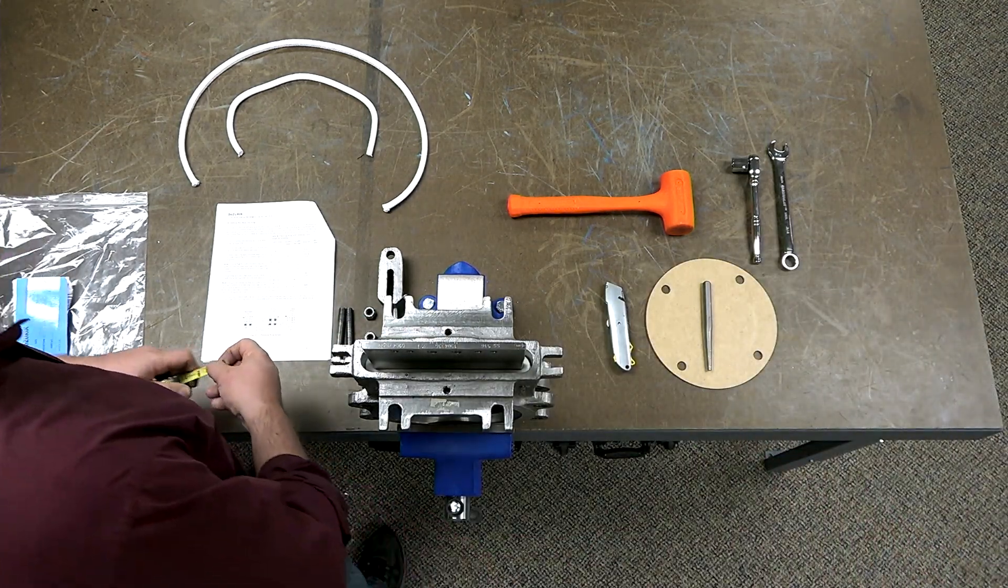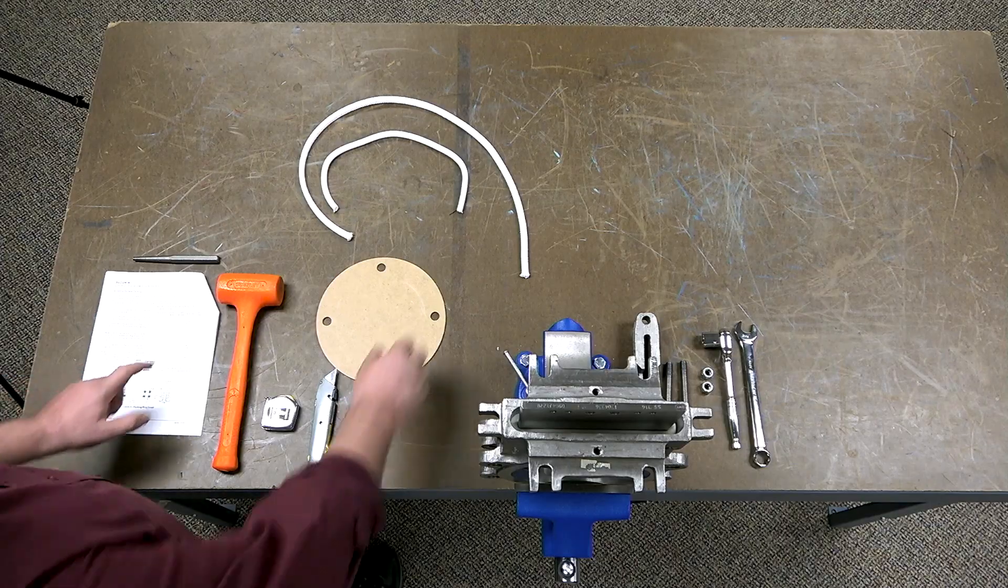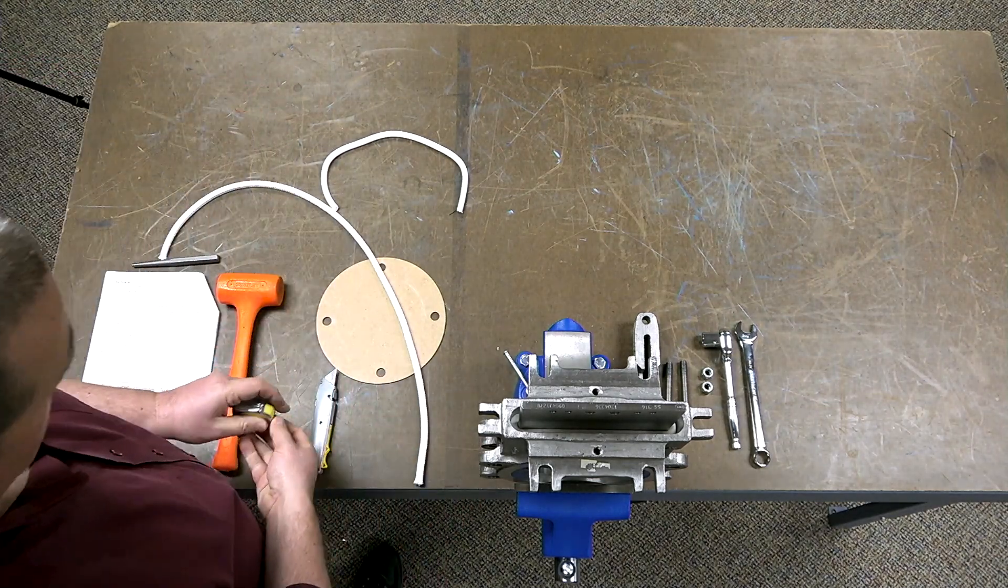Next, cut the packing to the correct length for the valve size, per the table in the IOM. Measure the proper length of the packing and cut the packing on a suitable cutting surface with a utility knife.